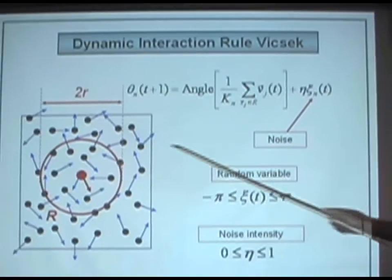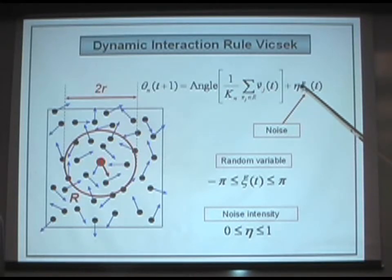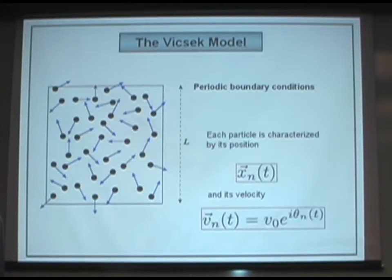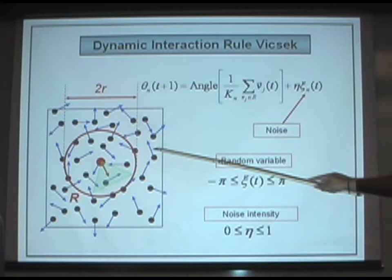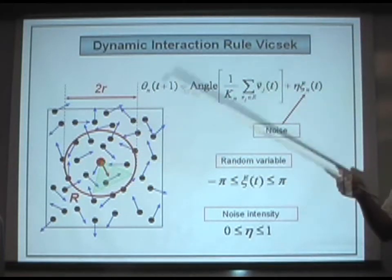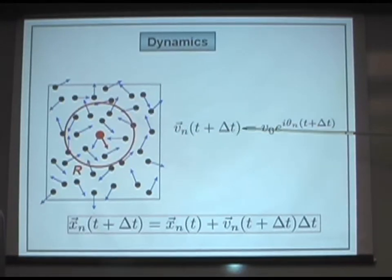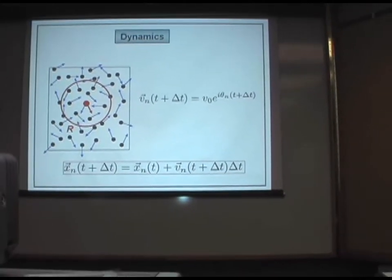Each particle in the system receives a clear input signal, which is the average velocity within the neighborhood, but then the particle decides to do something else, and we represent this something else as noise that we add to this angle. This noise is a random variable between zero and two pi, so we add a cone of possibilities to which the particle can move. We update all the particle velocities at a given time according to this rule, and then we update all the positions following this kinematic equation.